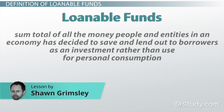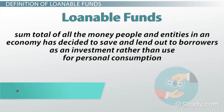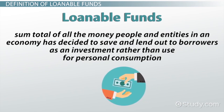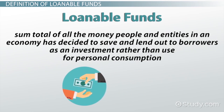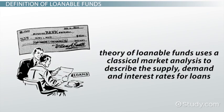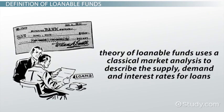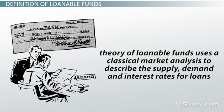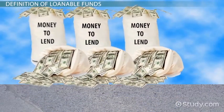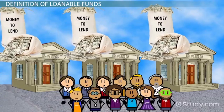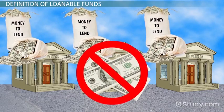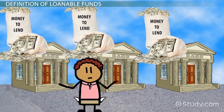Loanable funds is the sum total of all the money people and entities in an economy have decided to save and lend out to borrowers as an investment rather than use for personal consumption. The theory of loanable funds uses a classical market analysis to describe the supply, demand, and interest rates for loans in the market for loanable funds. The supply of loanable funds comes from people and organizations such as government and businesses that have decided not to spend some of their money but instead save it for investment purposes.